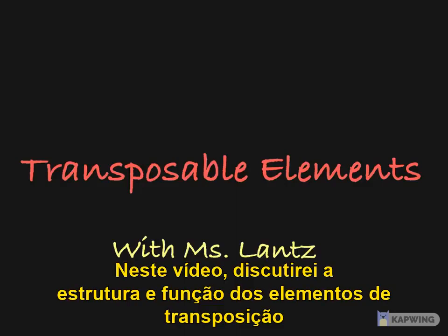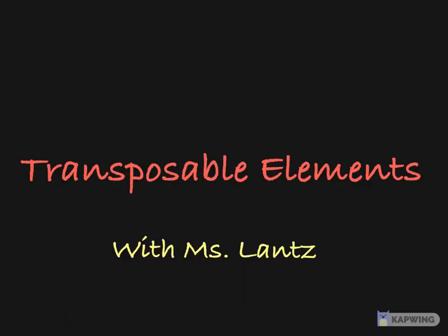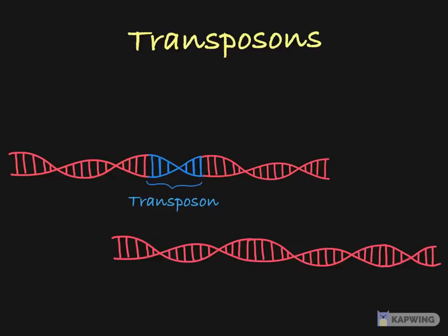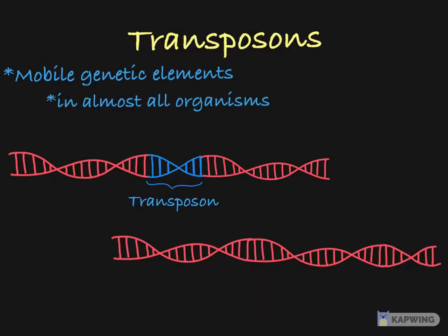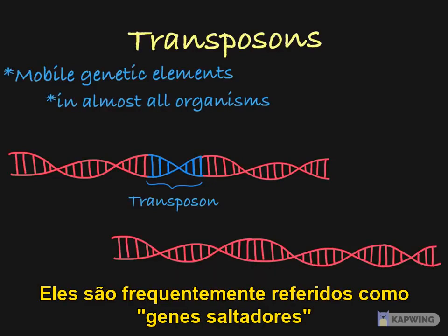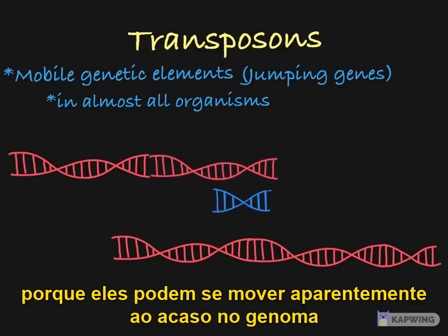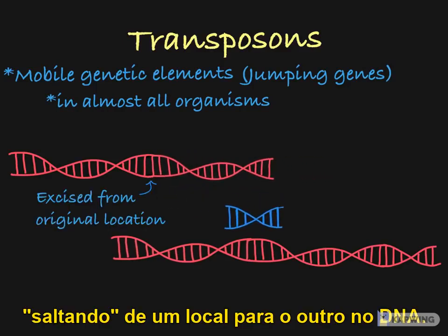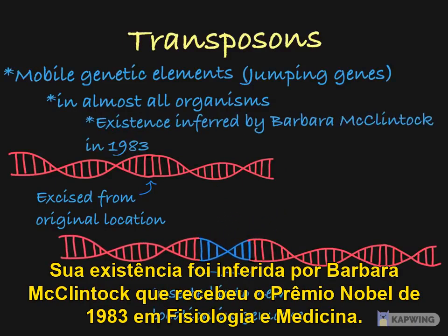In this video, I will discuss the structure and function of transposable elements, which I will also refer to as transposons. Transposons are mobile genetic elements which can be found in almost all organisms. They are often referred to as jumping genes because they can move seemingly at random around a genome, jumping from one location to the next in the DNA. Their existence was inferred by Barbara McClintock, for which she received the 1983 Nobel Prize in Physiology or Medicine.